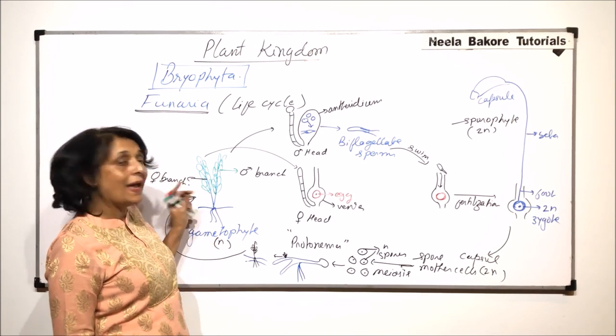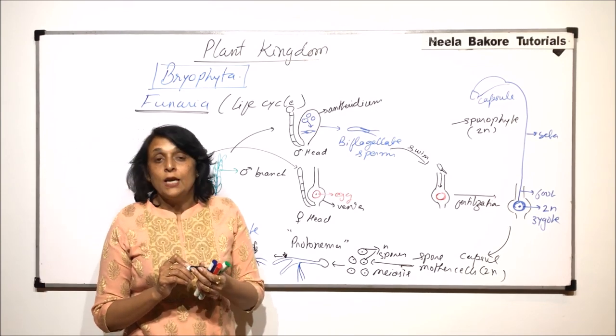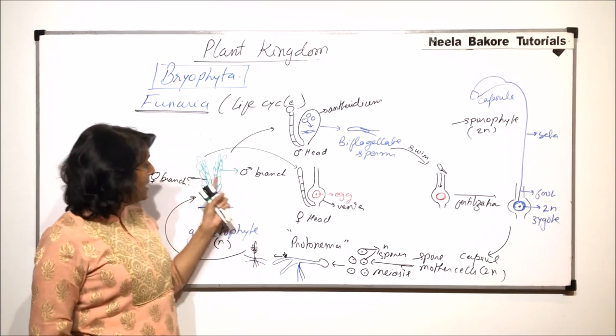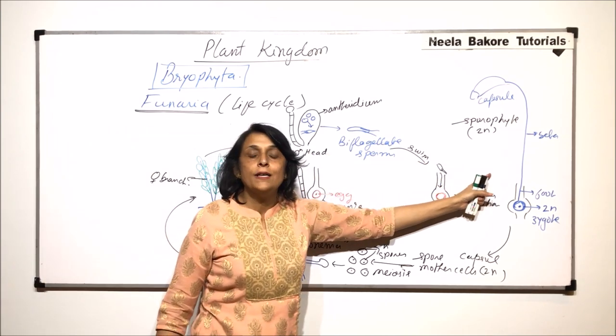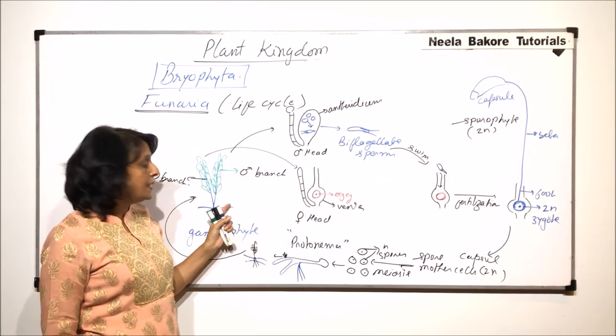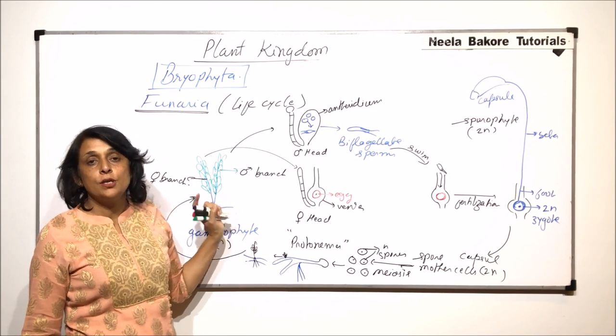Which germinate to form protonema and again the gametophyte. So there is an alternating gametophyte, sporophyte generation. Predominant is gametophytic generation.